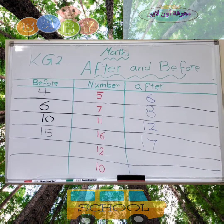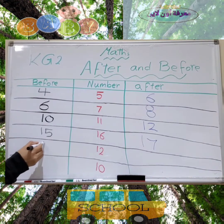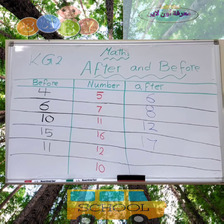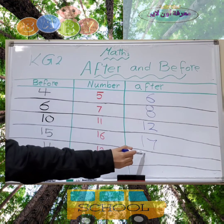Let's count back — before 12 we have 11. So the number before 12 is 11. Yes, number 11. Now, after 12: 1, 2, 3, 4, 5, 6, 7, 8, 9, 10, 11, 12, 13. We have number 13. The number after 12 is 13.